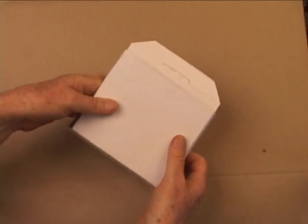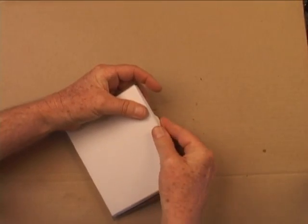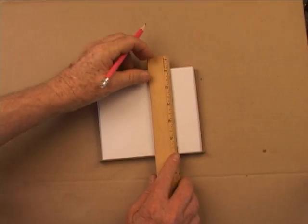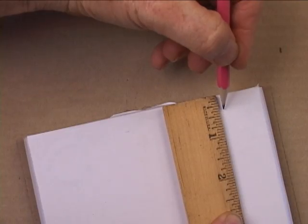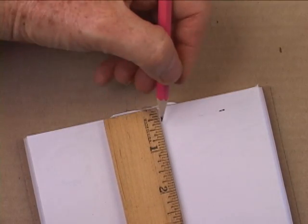To make the basic solar whirligig, start by folding the sides of a cardboard CD box and inserting the tab. On the top of the box, make two marks 3/8 inch in from the upper edge and about two inches apart.